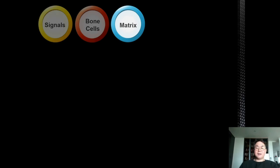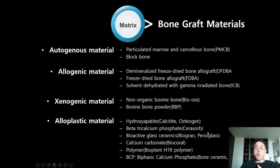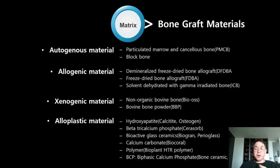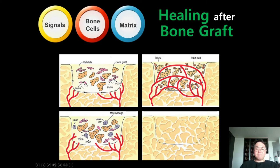The final factor is matrix — bone graft material. To hold signaling molecules, bone-forming cells, or osteoclasts, we need a scaffold. Scaffold is the matrix: autogenous bone, allogenic bone, xenogenic bone, and alloplastic material. Any kind of graft material can play a role as a scaffold matrix. We will discuss bone graft material in the next session. To summarize: to get successful bone regeneration after GBR or bone grafting, we require signaling molecules, bone cells, and matrix.